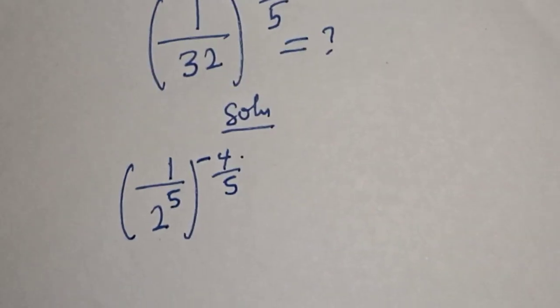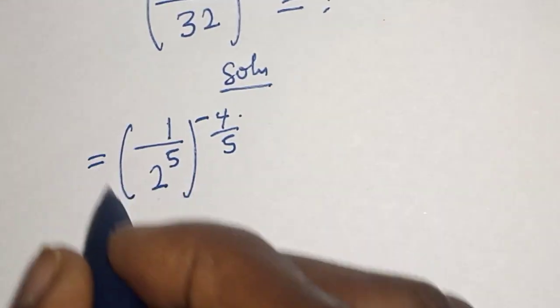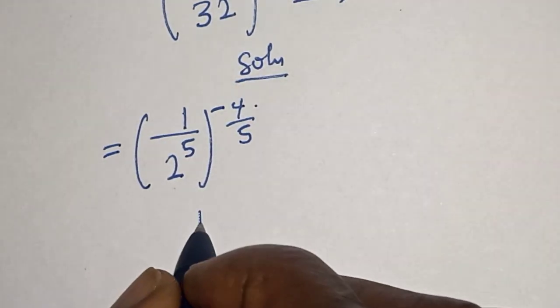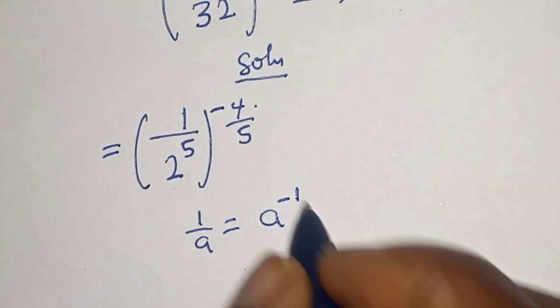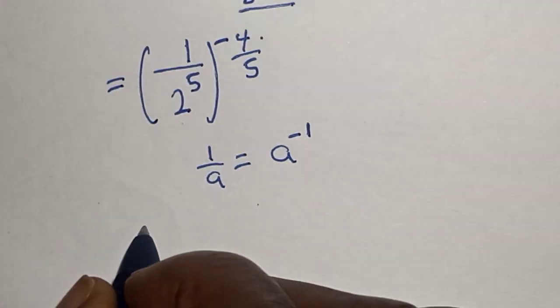Now if you have 1 over a, this is equal to a raised to power minus 1. Then this is equal to 2 raised to power minus 5, raised to power minus 4 over 5.